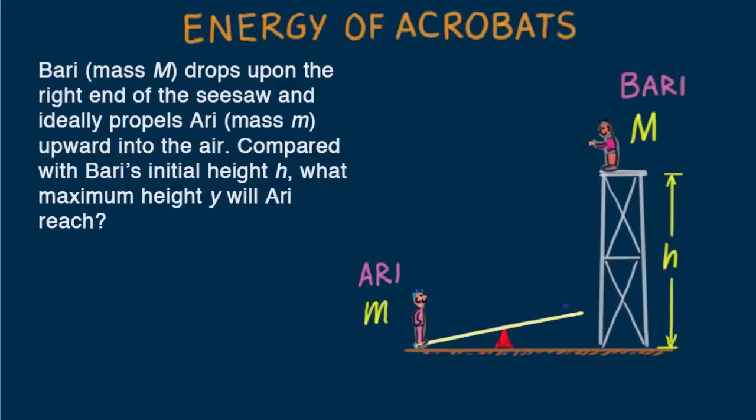Before we attempt a solution, what's going on here? First, the problem states that Ari is ideally propelled upward. The term ideal means we can neglect inefficiencies such as air resistance, friction, or heat generated as the seesaw rotates and hits the ground.